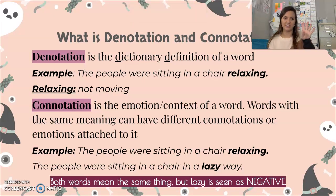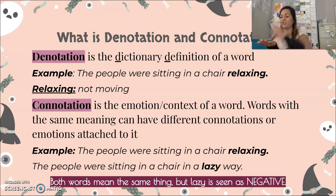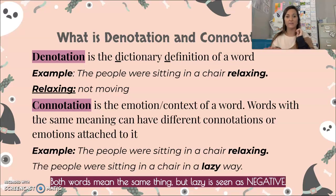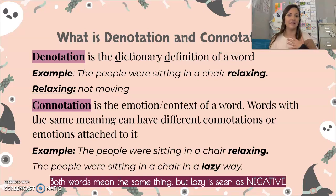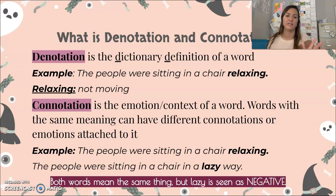We are learning four new definitions today. Some of them may be a review, some may be brand new, which is totally fine. The first one is connotation and denotation. Denotation is simply the dictionary definition of the word — if you look it up in a dictionary or Google, that's the exact meaning. An example is: people were sitting in a chair relaxing. Relaxing means lounging, not really moving.